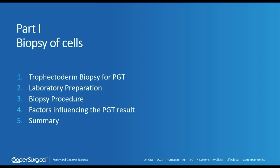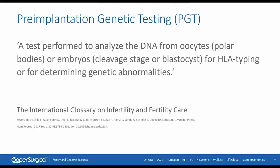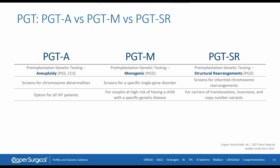Let's start with the trophectoderm biopsy procedure process. Pre-implantation genetic testing is a test performed to analyze the DNA from oocytes or embryos, and this can be done to determine genetic abnormalities or for HLA typing. There are three types of PGT. PGT-A, where A stands for aneuploidy testing, and this is where one screens for chromosome abnormalities.